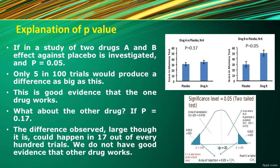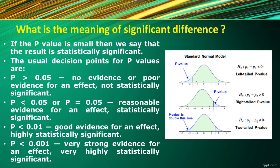What about drug A? For this drug, p is equal to 0.17. It means that 17 out of 100 trials support the null hypothesis, whereas the remaining 83 percent will not support it, reflecting that there is no effect or very little effect between drug trials with placebo.